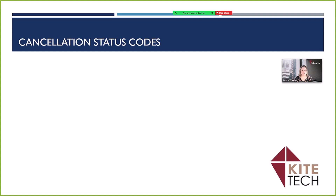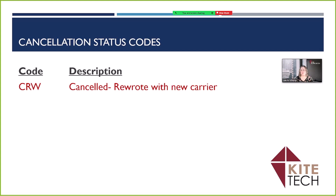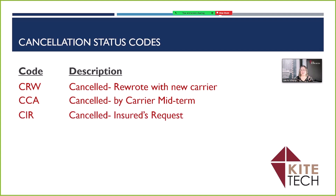Next are our cancellation status codes. Cancellation status codes should be concise and clear. We don't want too many status codes for cancellations or it becomes impossible to manage. CRW would be canceled rewrote within the agency to a new carrier, so it's not lost business. These can be excluded from lost business reports. CCA is canceled by carrier midterm. CIR is canceled insurance request. Then there's NON for non-renewal or lost business — at the renewal, if you've already actioned renewed the policy in the system, NON would fit that non-renewed policy term.